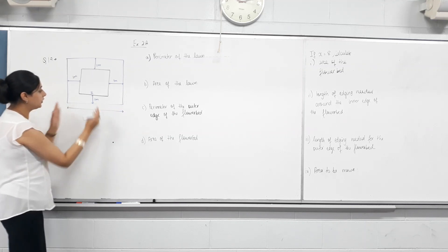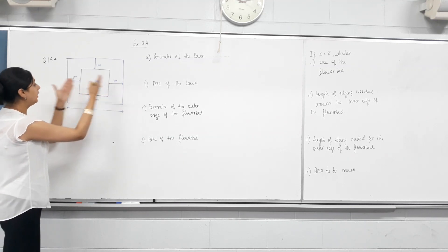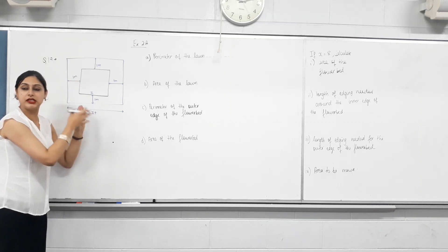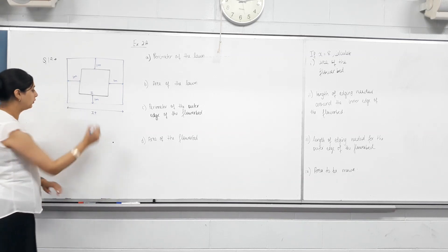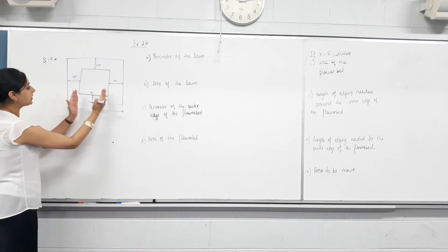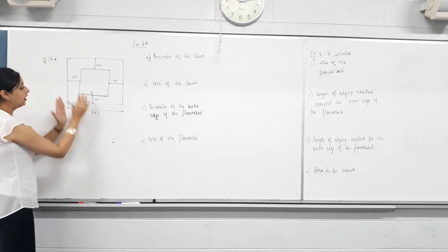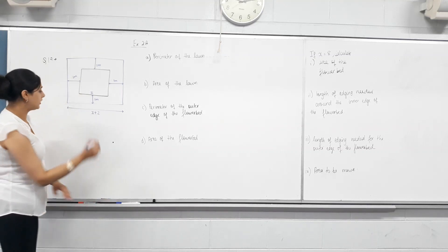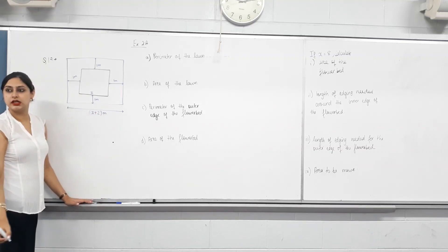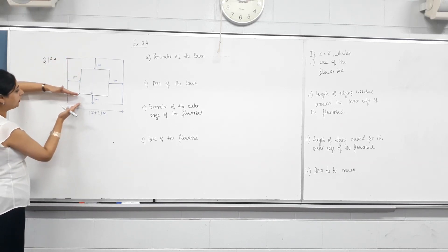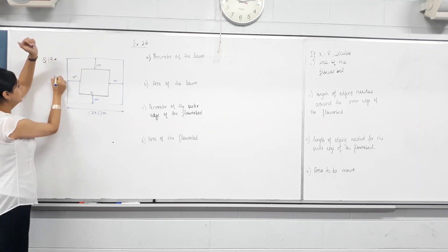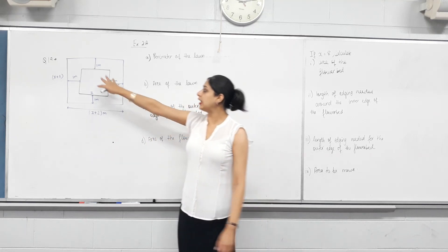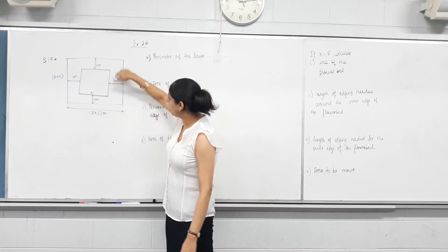What will be the length of this outer edge? So this is X. You've got 1 meter on this side, 1 meter on that side. So X plus how many meters is the length of the outer edge? 2. Do we all agree? Because this is X, you've got 1 meter on this side, 1 meter on that side, so the outer edge is 2 meters more than the inner edge. Same with the width — this is X, 1 meter on each side, so this length will be X plus 2 as well. So we have another square now. The inside is the lawn and this part is the flower bed.